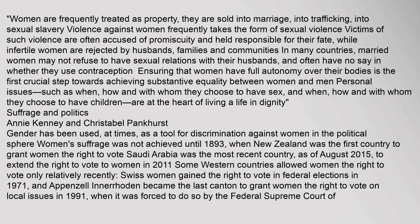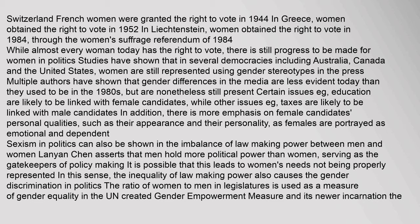Suffrage and Politics: Gender has been used, at times, as a tool for discrimination against women in the political sphere. Women's suffrage was not achieved until 1893, when New Zealand was the first country to grant women the right to vote. Saudi Arabia was the most recent country, as of August 2015, to extend the right to vote to women in 2011. Some Western countries allowed women the right to vote only relatively recently: Swiss women gained the right to vote in federal elections in 1971, and Appenzell Innerrhoden became the last canton to grant women the right to vote on local issues in 1991, when it was forced to do so by the federal Supreme Court of Switzerland. French women were granted the right to vote in 1944; in Greece, women obtained the right to vote in 1952; in Liechtenstein, women obtained the right to vote in 1984 through the women's suffrage referendum of 1984.